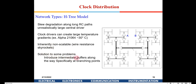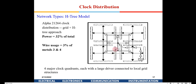Some of these problems have been eliminated by using intermediate buffers. With buffers, proper sizing can be maintained because there are no reflections, so wire lengths can be kept constant. However, introducing intermediate buffers increases complexity and capacitance.